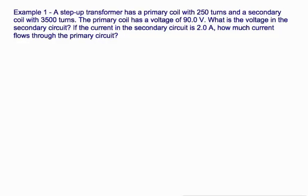The final math problems we're going to do in this chapter have to do with transformers. A step up transformer has a primary coil with 250 turns. Remember that the number of turns is N, and we're talking about primary coil, 250 in a secondary coil with 3,500 turns.